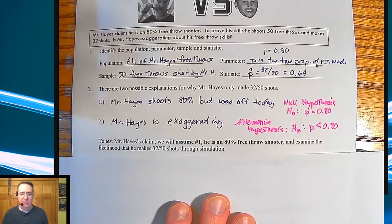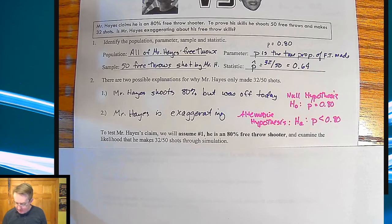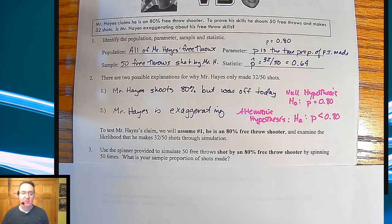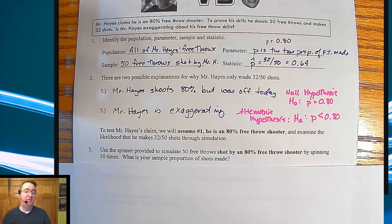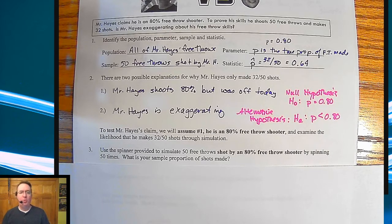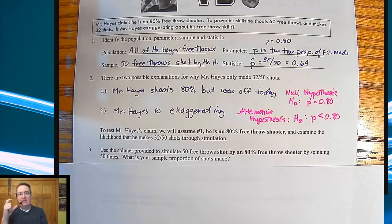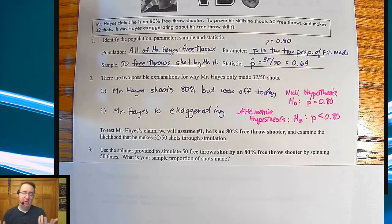To test Mr. Hayes's claim, we'll assume he is an 80% free throw shooter and see what's the likelihood that he made 32 out of 50 shots. To do that, we're going to run a simulation using a spinner. You'd spin it 50 times and count makes and misses. There are electronic spinners linked below. You need to set it so that 20% of outcomes are misses and 80% are makes — if there are 10 spots, two are misses and eight are makes.